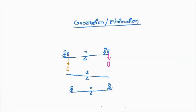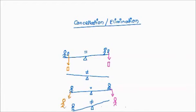Now let's say one boy gets down from the seesaw. Now there is no weight on one side and lots of weight on the other side, so the seesaw is going to go down on that side — it is not equal. So if I have to keep the seesaw equal, I have to ensure that the other boy also gets down. If this boy also gets down, again the seesaw will be equal. So what we are saying is: to keep the seesaw equal, we have to subtract the same amount from both sides.